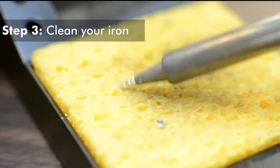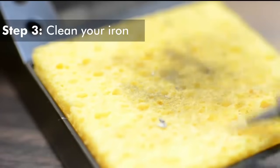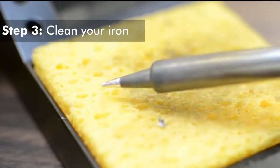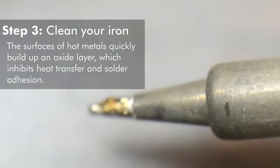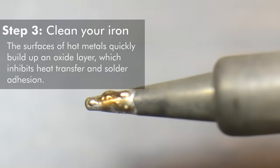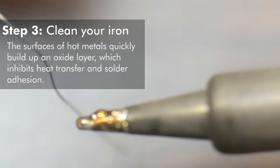Next, clean the tip of your iron. Use a brass sponge or a wet sponge to remove any oxidation or excess solder from the tip. A dirty tip is covered in metal oxides that transfer heat badly and can result in poorly soldered joints.